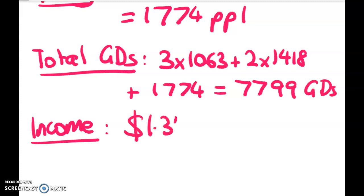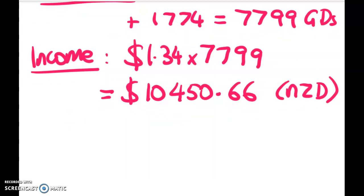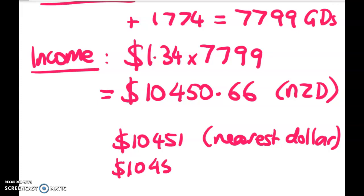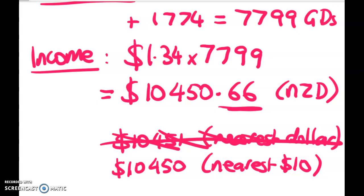Income = $1.34 × 7,779 = $10,450.66 NZ dollars. You could round this but it's never a bad idea to leave things alone until the very end of the problem. You could round to the nearest dollar or nearest ten dollars — both are conservative. I wouldn't round this up at all since we don't actually have that extra money. I'll keep the full number and move to the next part.